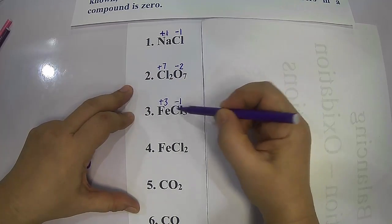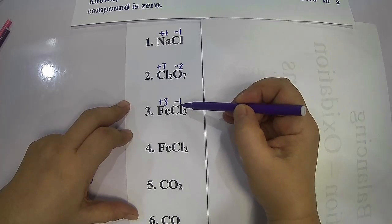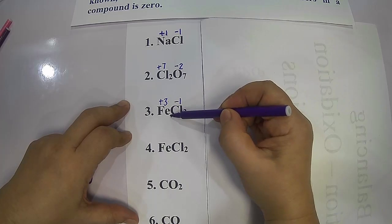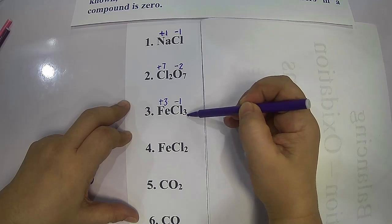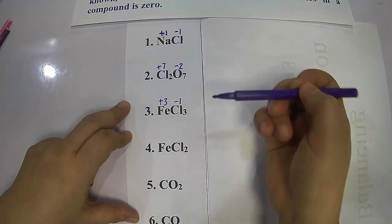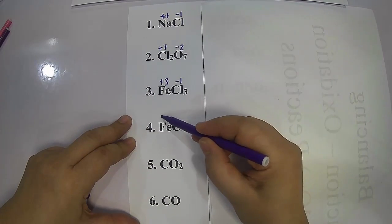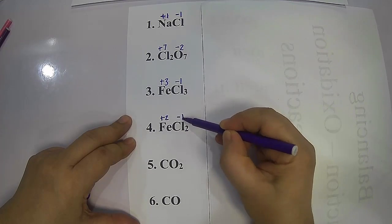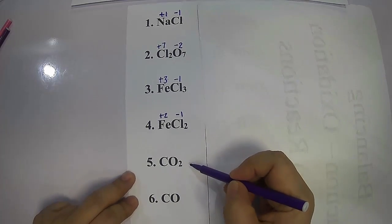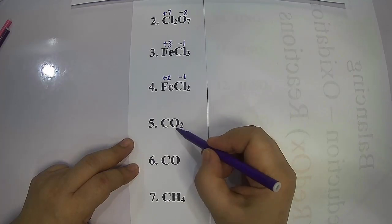Applying the rule that the sum of oxidation numbers in a compound is zero: positive three times one is positive three, plus three times negative one is negative three — the sum equals zero. For ferrous chloride (FeCl₂), by the crisscross method, iron is positive two and chlorine is negative one; the sum equals zero. For carbon dioxide (CO₂), oxygen is more electronegative so it has negative two.